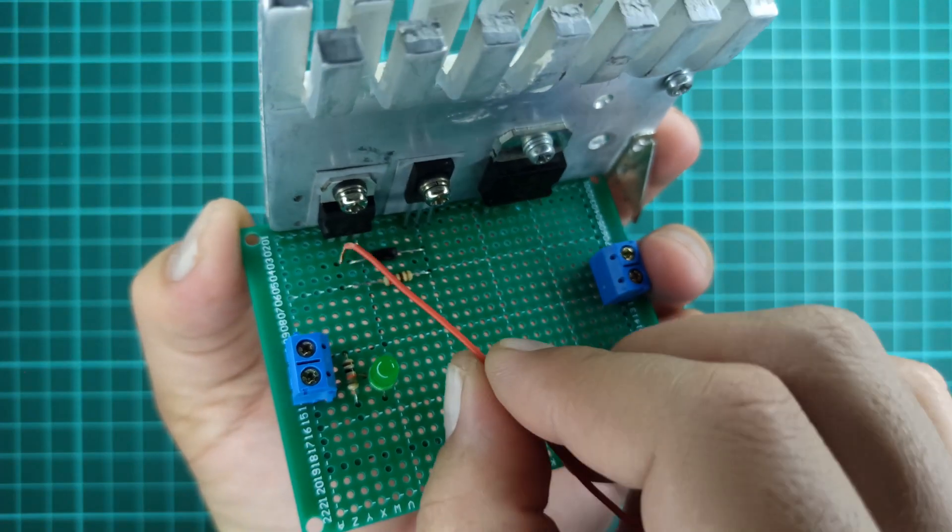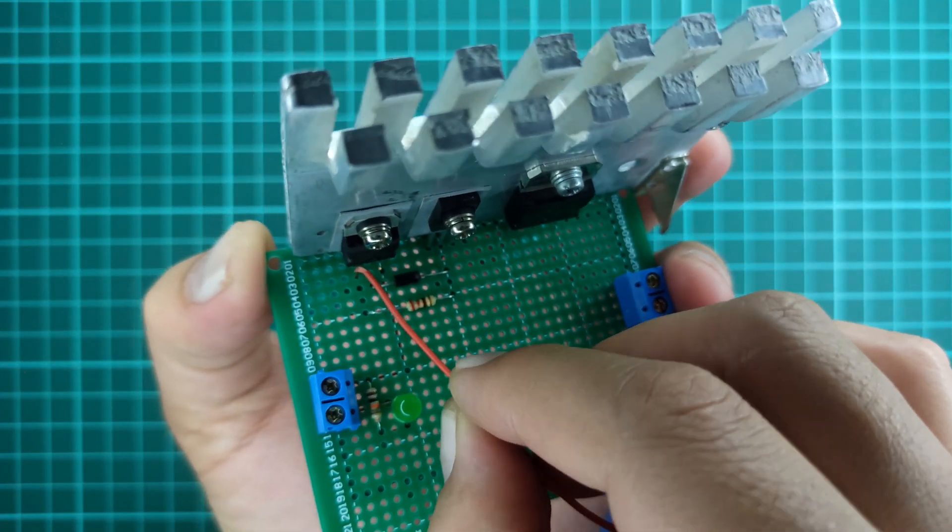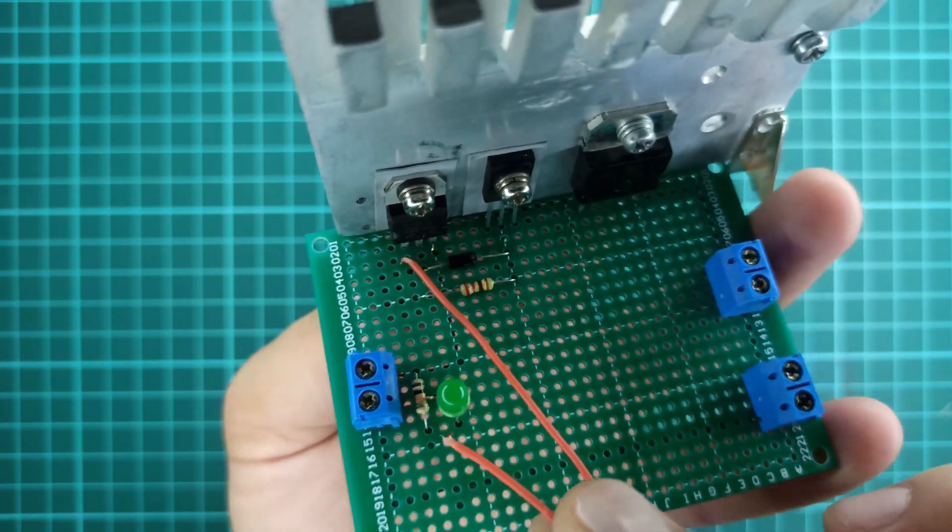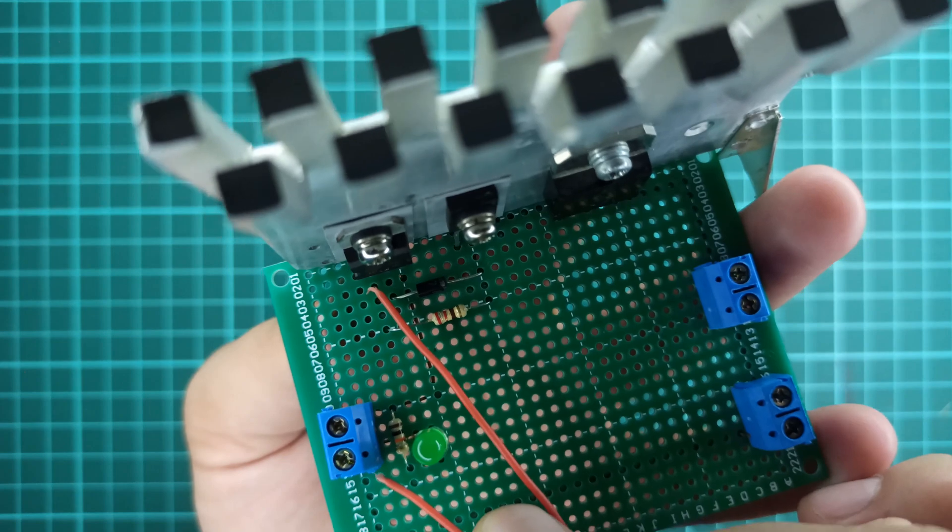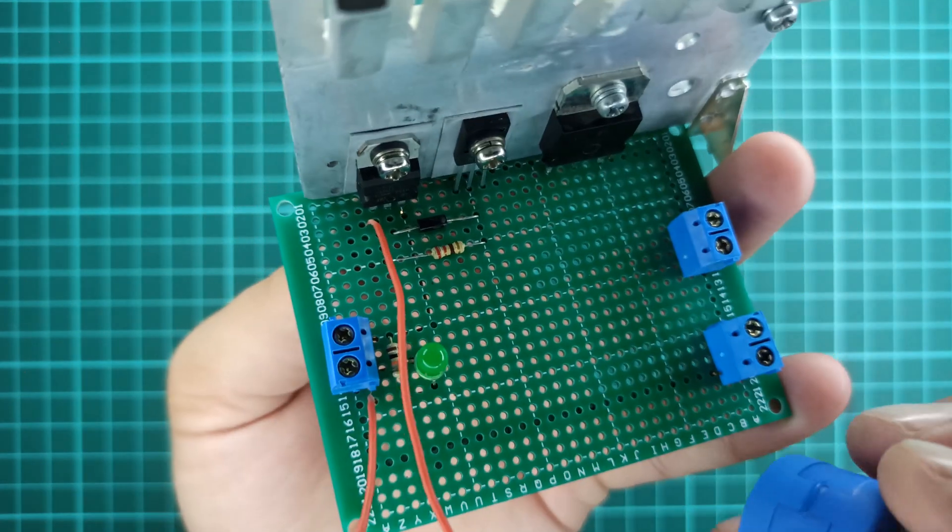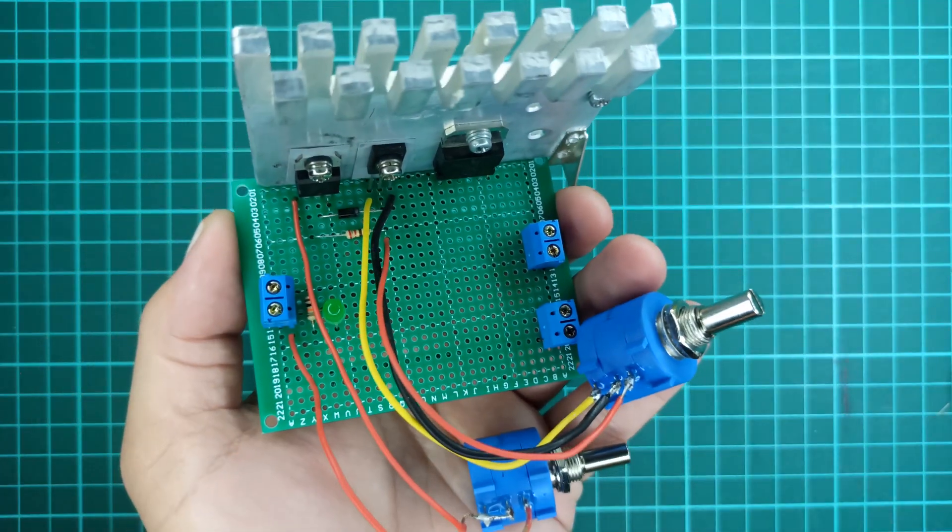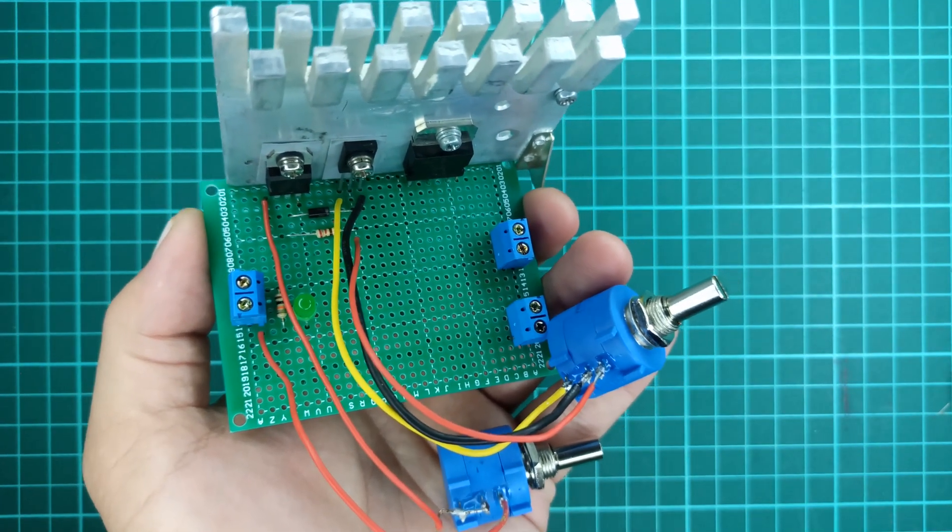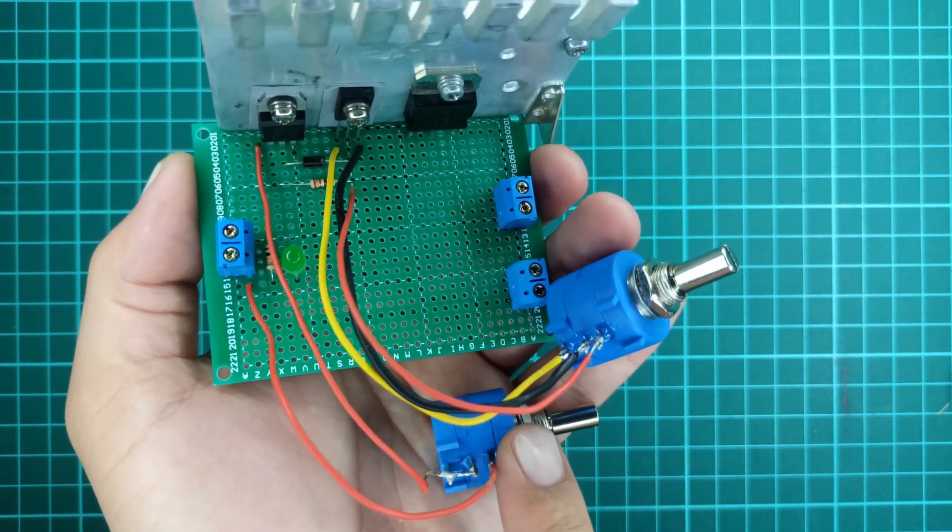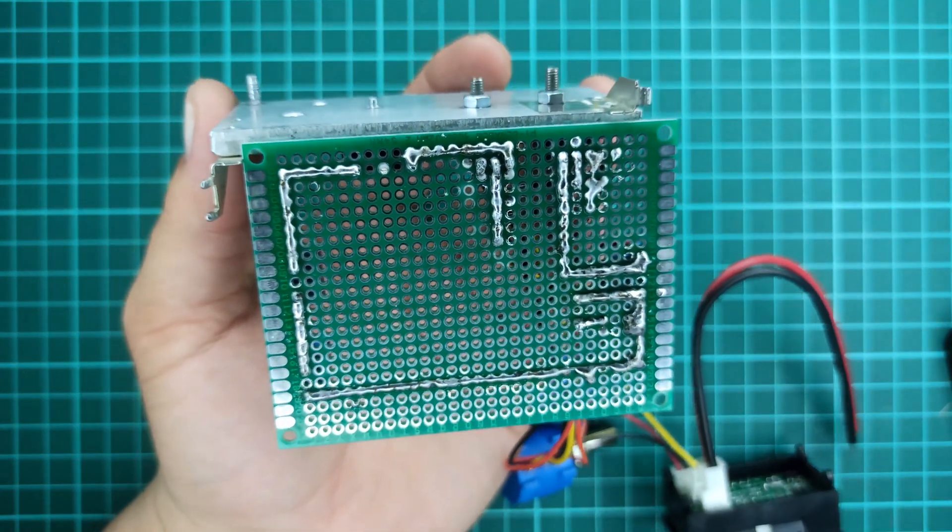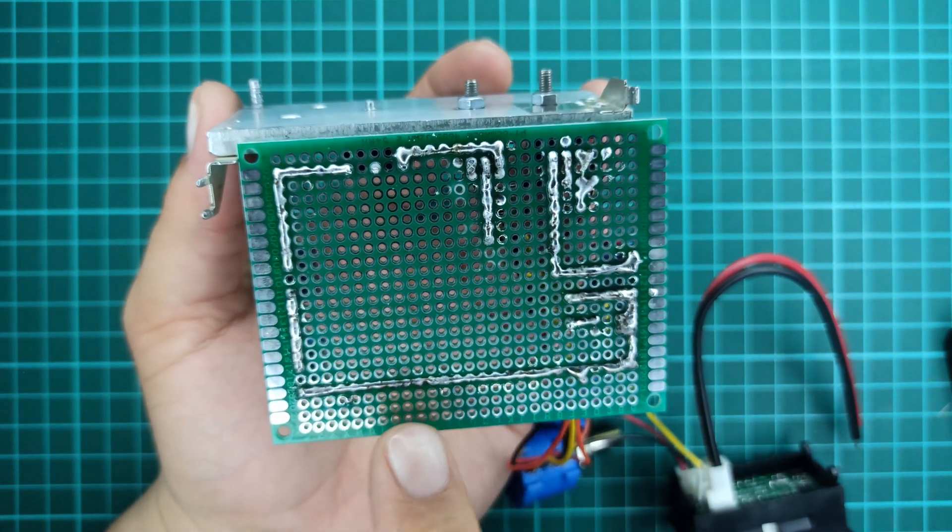Solder the potentiometer wires as indicated in the schematic diagram. The PCB traces need to be thick enough to allow passage of high current.